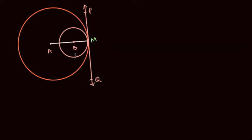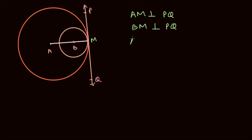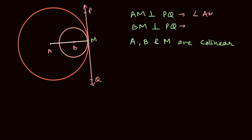We could also have a case where one of the smaller circles is inside the other circle and PQ is still a tangent to both circles. In this case, AM is perpendicular to PQ and BM is also perpendicular to PQ, from the property of circles, since B is the center of the smaller circle and A is the center of the larger circle. What we need to prove here is that points A, B, and M are collinear. From these two facts, angle AMP equals 90 degrees and angle BMP equals 90 degrees.